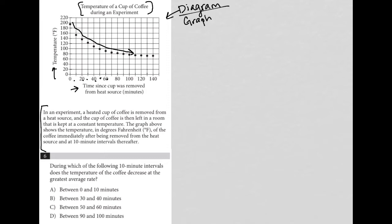which is exactly what we expect to see in terms of the trend of temperature. So question number six says, during which of the following 10 minute intervals does the temperature of the coffee decrease at the greatest average rate?